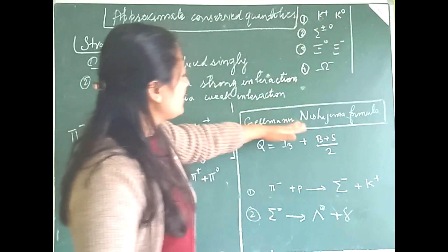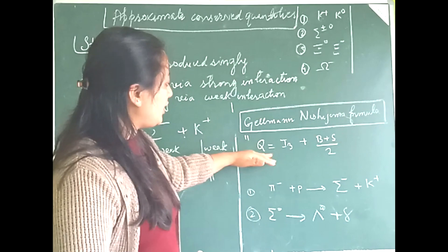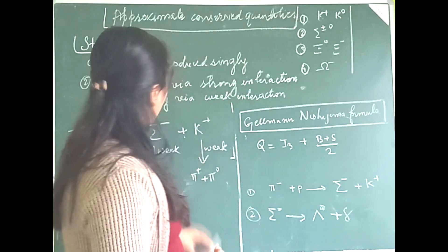We will find the strangeness value for these particles using the Gell-Mann formula. According to this formula: Q = I₃ + (B + S) / 2.